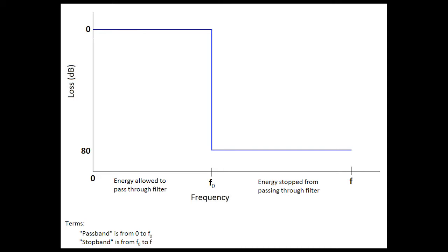The insertion loss is essentially very low — ideally at zero until you get out to F-naught. F-naught is the cutoff frequency, and that's when the insertion loss curve makes an abrupt change and dives down to 80 dB loss, which is a tremendous amount of loss.